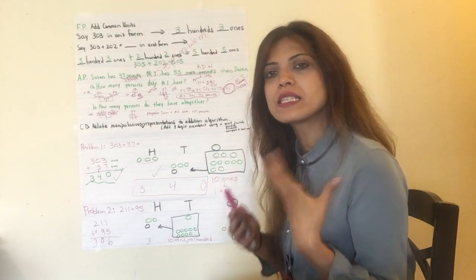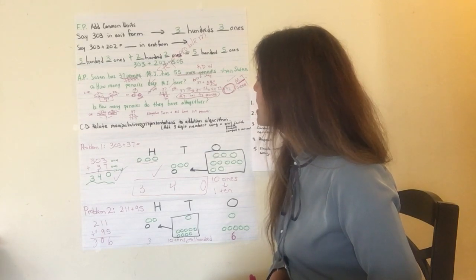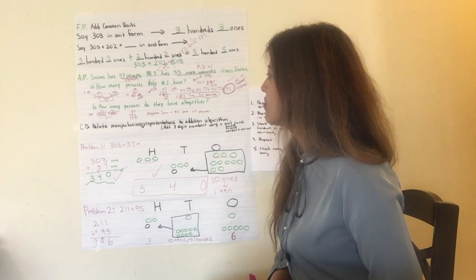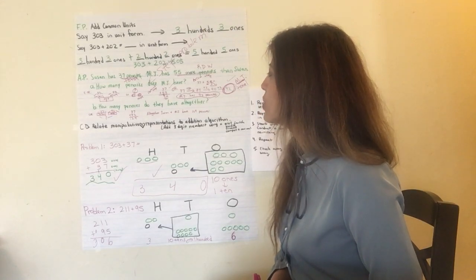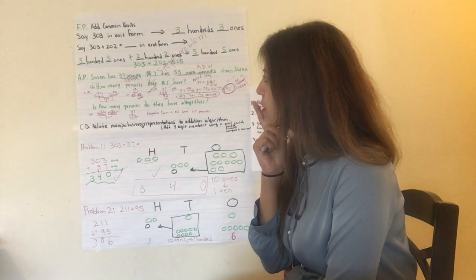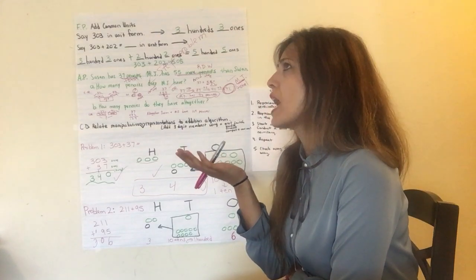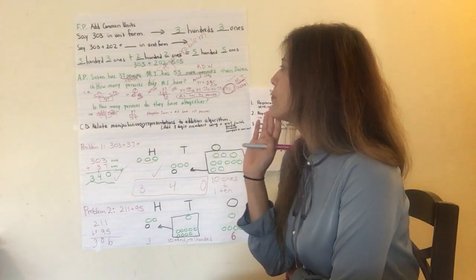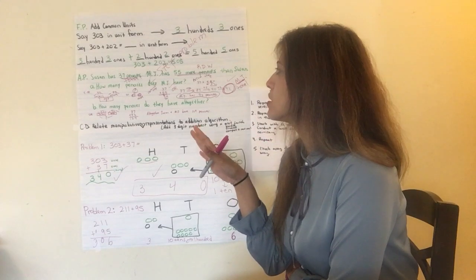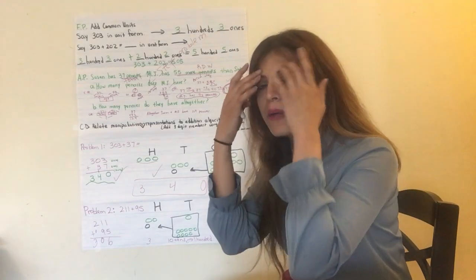So you want to read it twice at least, and you want to paraphrase what's happening so you can internalize and conceptually see what's happening. So Susan has 37 pennies. MJ has 55 more pennies than Susan. A, how many pennies does MJ have? B, how many pennies do they have altogether? Let me paraphrase this. So Susan has 37 pennies. We don't really know what MJ has because they're just telling us that she has 55 more than Susan. So that's important to understand. Did you see what I just did?